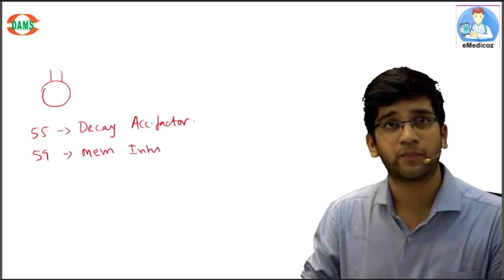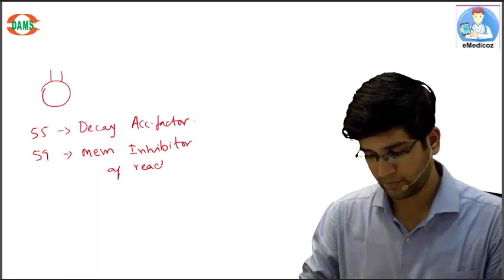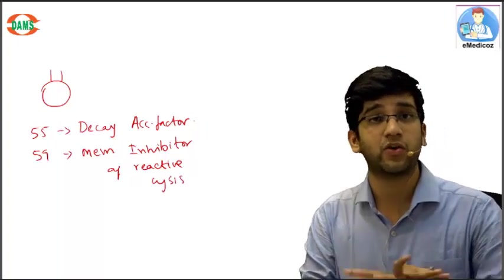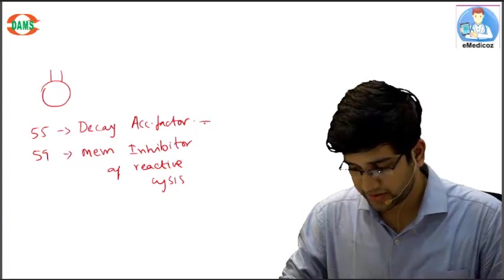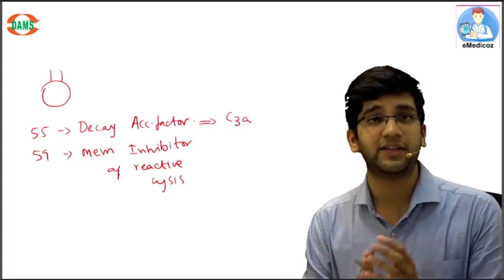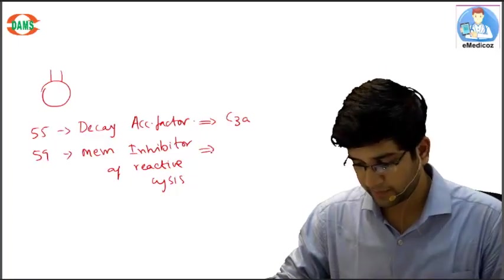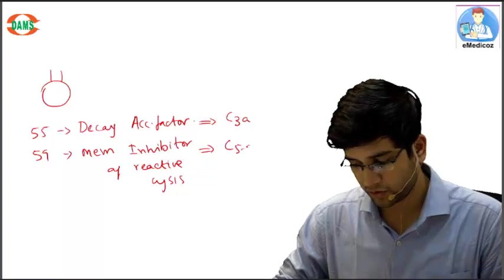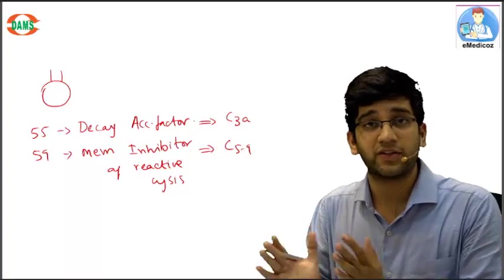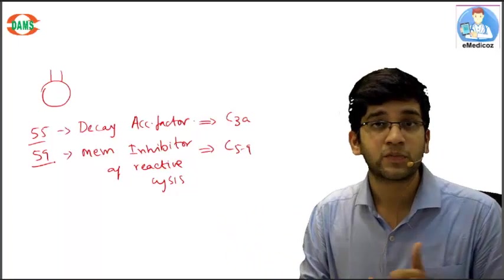CD55 has another name called Decay Accelerating Factor, and CD59 has another name called Membrane Inhibitor of Reactive Lysis. These are both present normally in all our RBCs. CD55 tackles the complement protein C3a, which is the main component of the complement, and CD59 tackles the membrane attack complex.